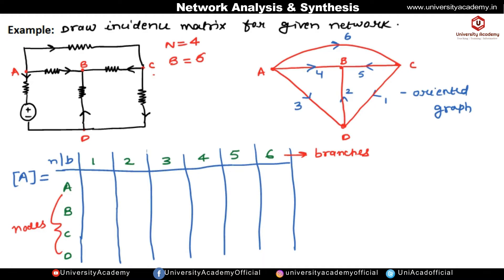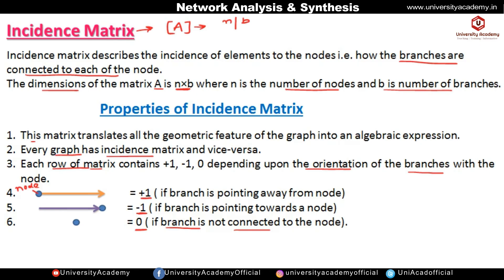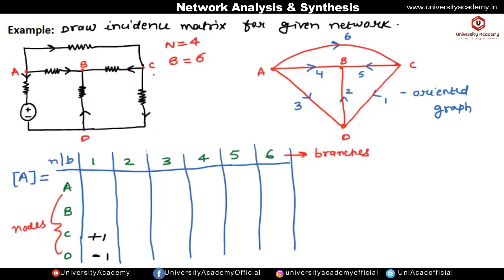For branch one, it is pointing away from node C, so we write plus one for C, and pointing toward node D, so minus one for D. Node A and node B are not connected to branch one, so they get zero. For branch two, it is connected between node B and node D — pointing away from D and pointing toward B, so B gets minus one.